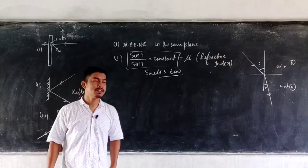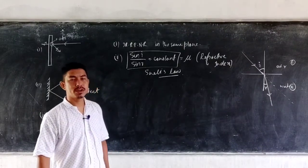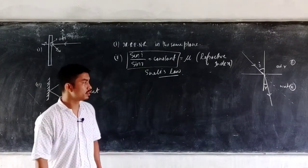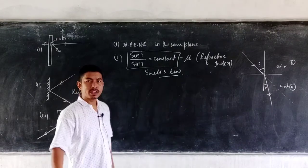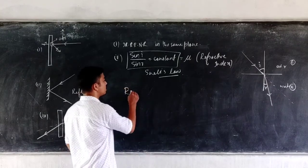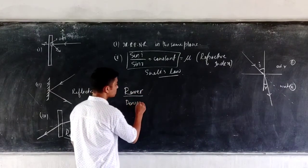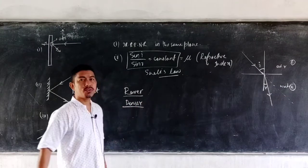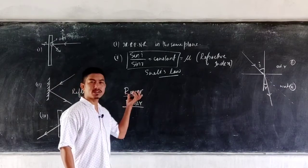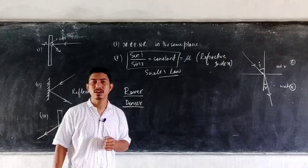The next important topic is the bending of light when it passes from rarer to denser, denser to rarer, and when both mediums are optically the same. The mediums are said to be rarer or denser depending on how fast the ray of light travels in them. The medium in which the ray of light travels faster is the rarer medium; the one in which it travels slower is known as the denser medium.